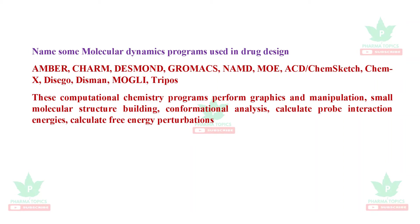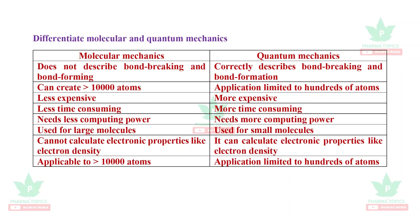Some of the molecular dynamics programs used in drug design are AMBER, CHARMM, Desmond, GROMACS, NAMD, CHEMEX, DINGO, DISMAN, MOGLI, and TRIPOS. Among these, GROMACS is very widely used. Desmond from Schrödinger is also free to use. These computational chemistry programs perform graphics and manipulation, small molecular structure building, conformational analysis, calculation of probe interaction energies, and free energy perturbations.